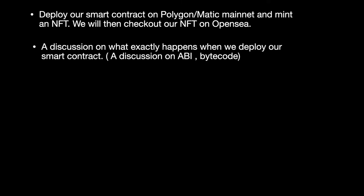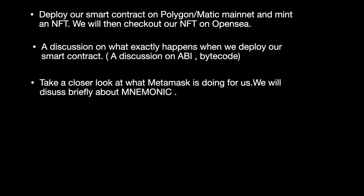Now we'll discuss what exactly happens when we deploy our smart contract, because I think there is still a gap from my explanation in the last video. For example, when we use the truffle migrate command, under the hood truffle first compiles our Solidity code and creates a directory called build/contracts, and within it stores the ABI and bytecode in a JSON file. Understanding what ABI and bytecode are is really important to interact with contracts on the Ethereum blockchain.